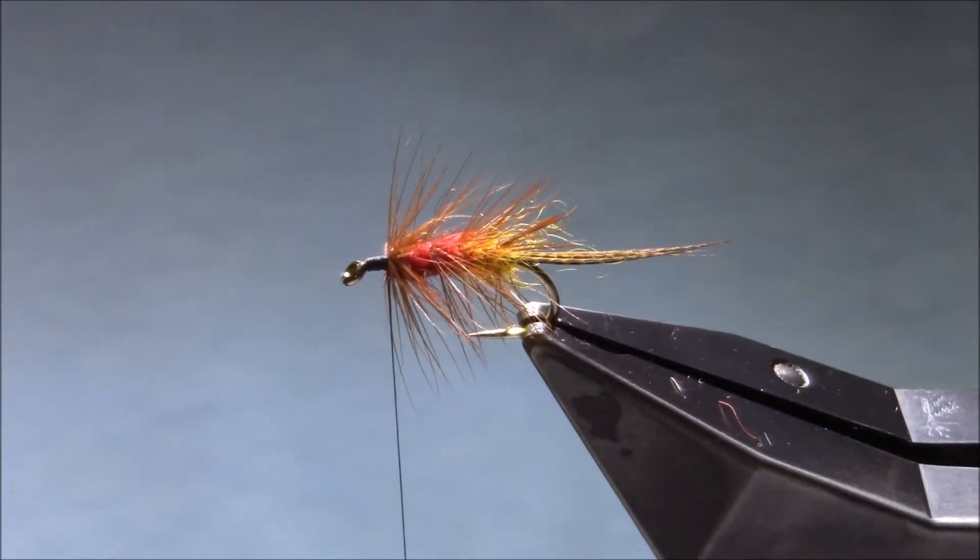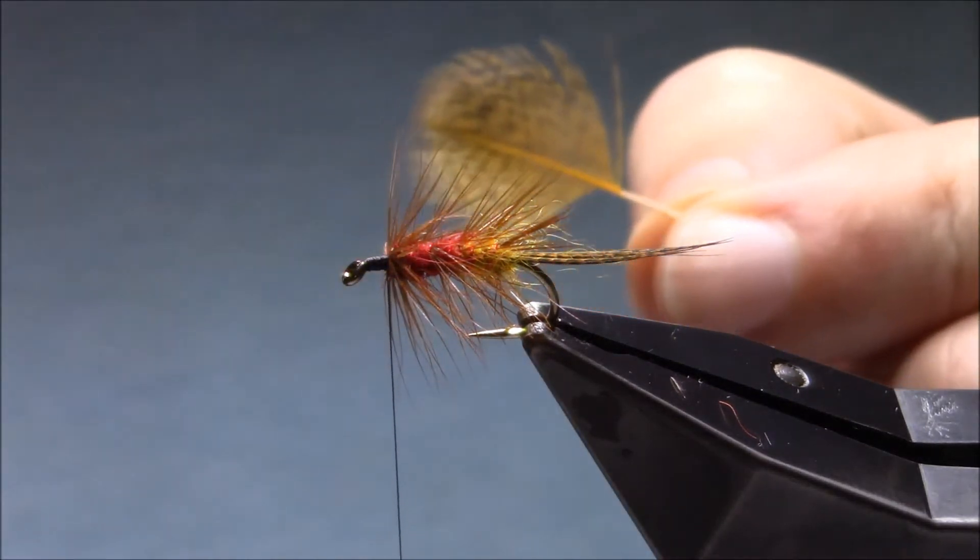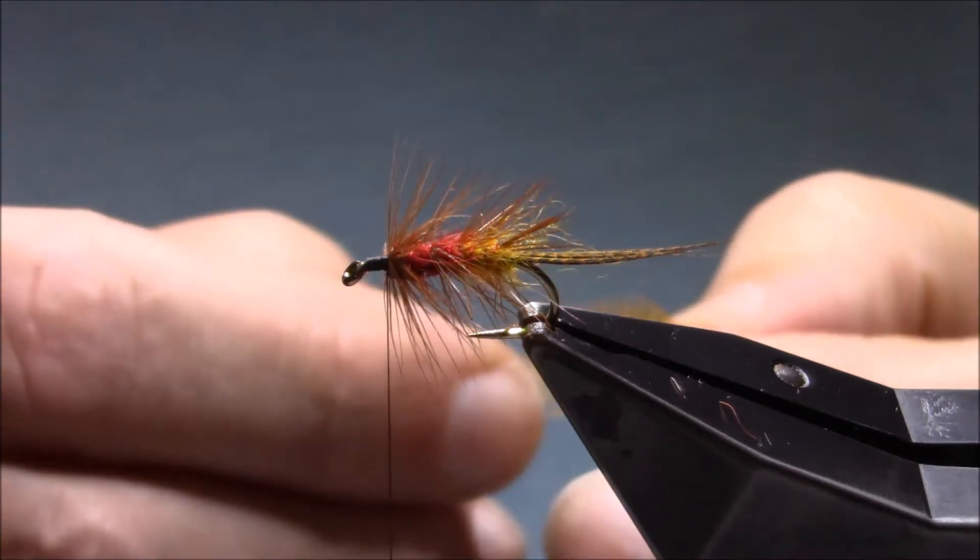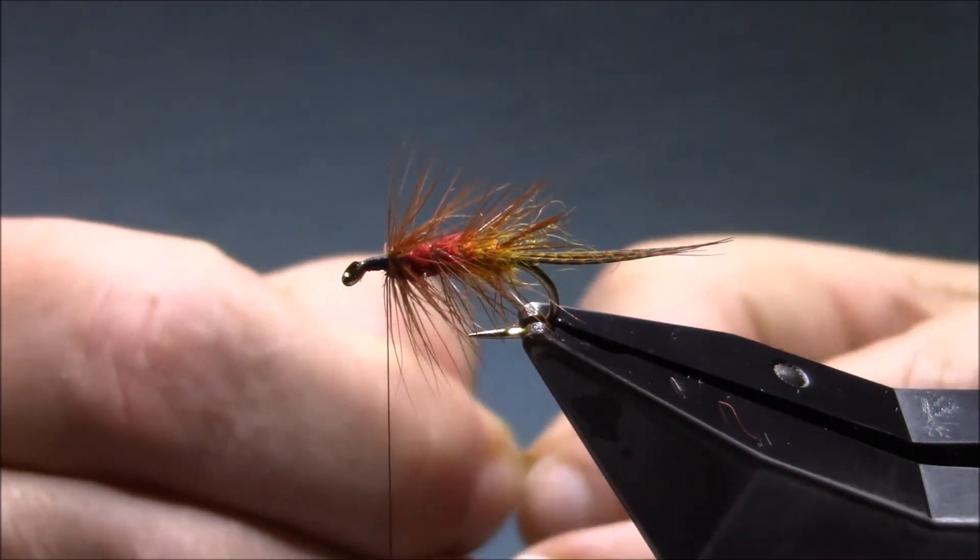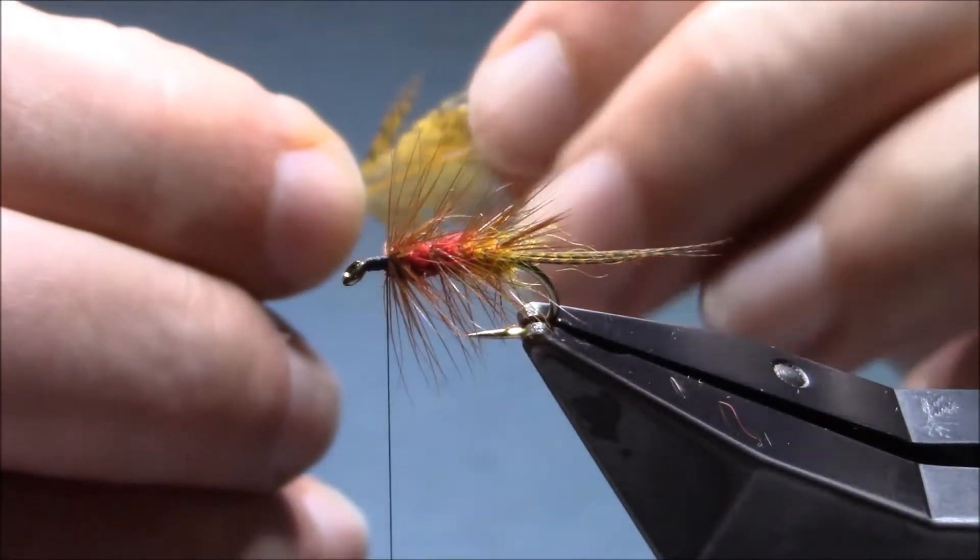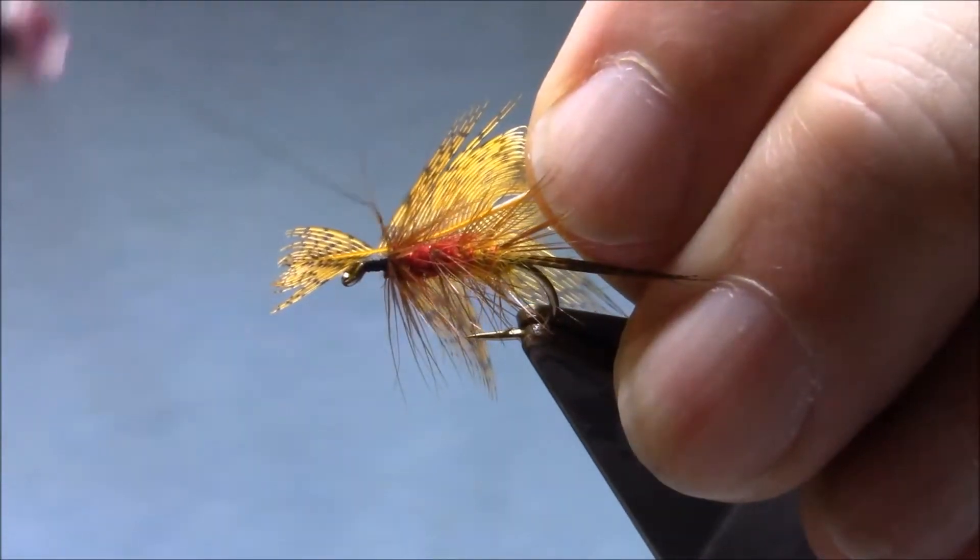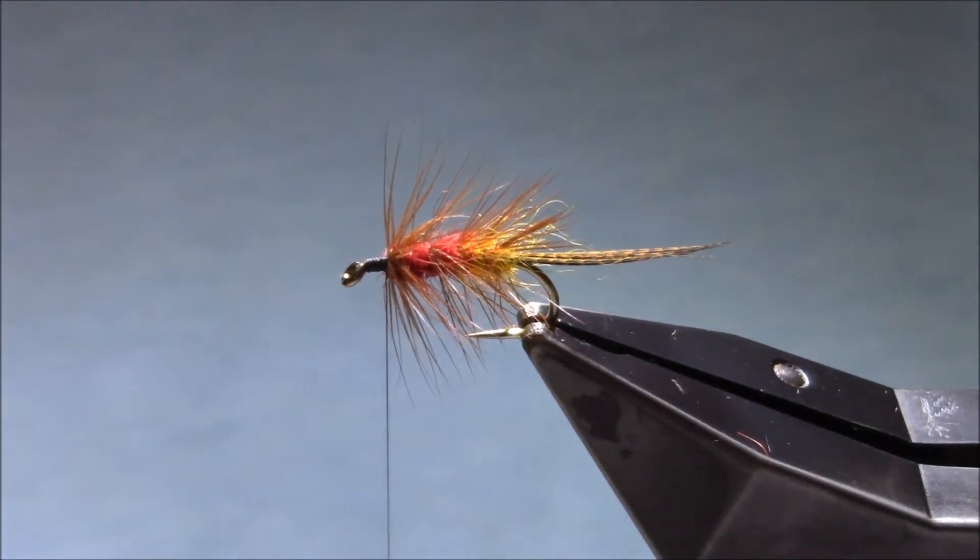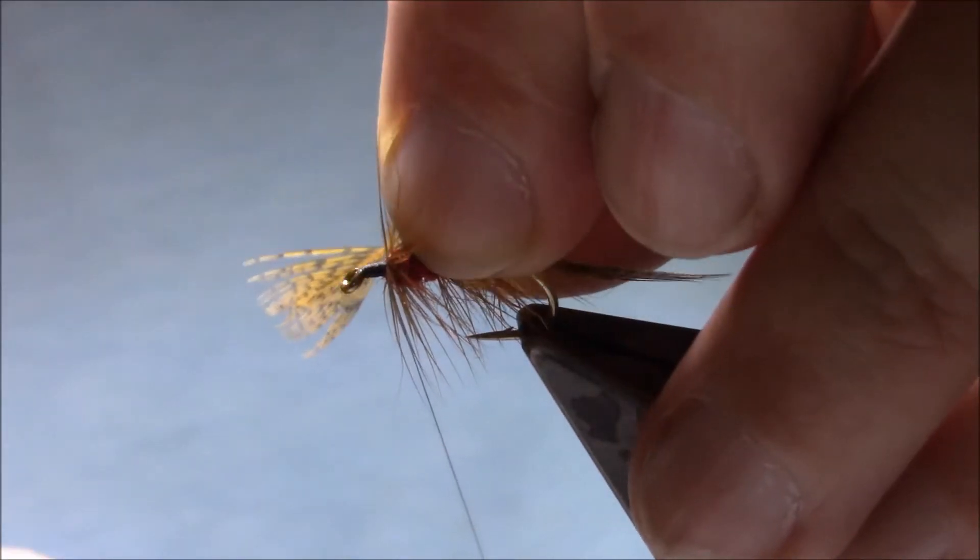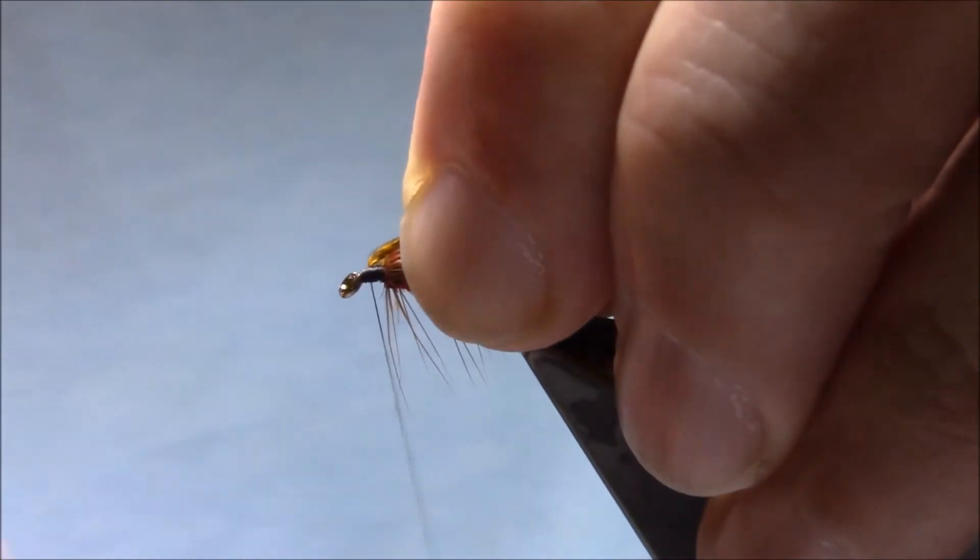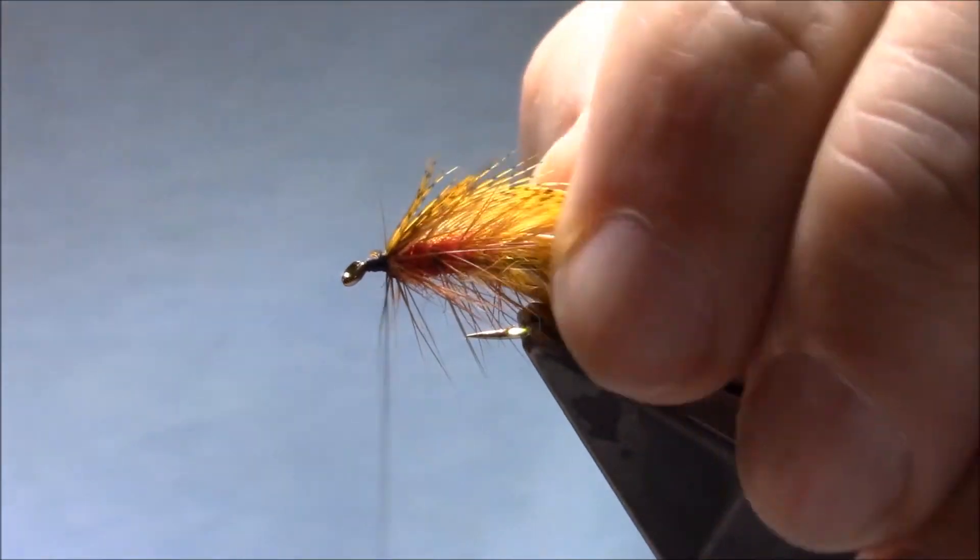So this is where the variants start coming in, so for the shoulder we tie in a grey partridge hackle. Again, this is Irish Golden Olive, tie it in with a tip. A couple of turns forward, wind back over it.